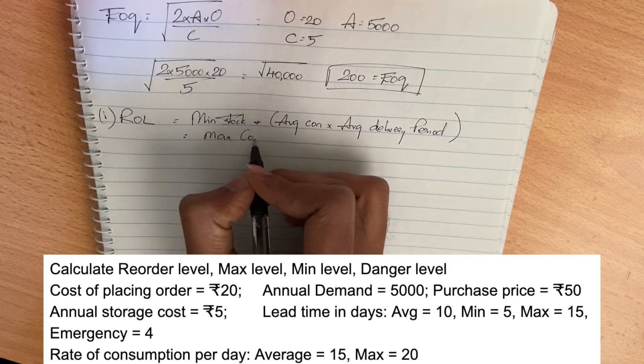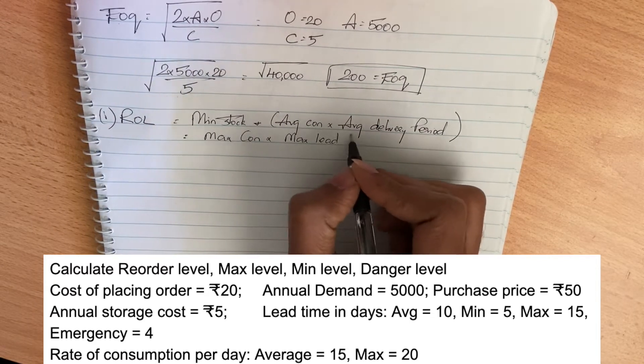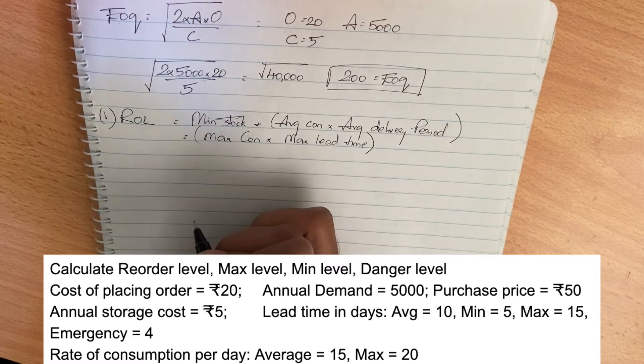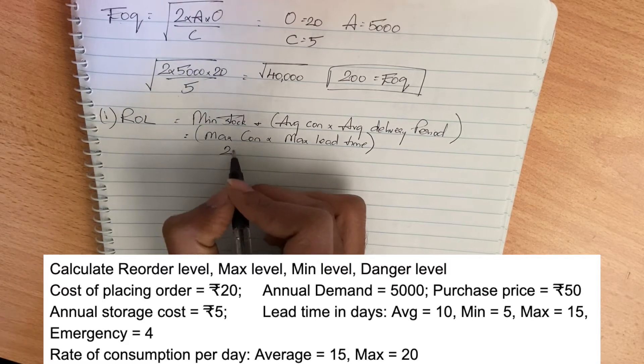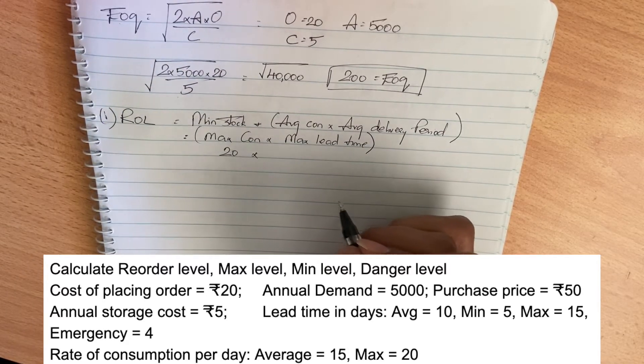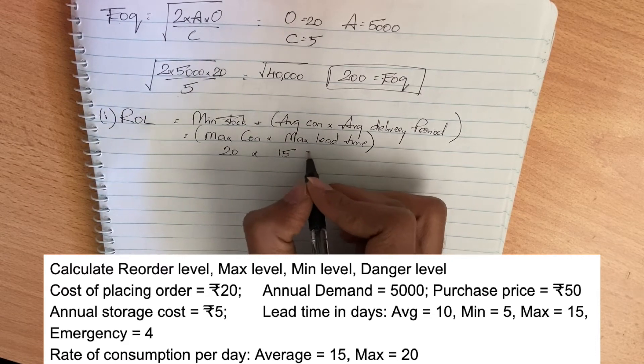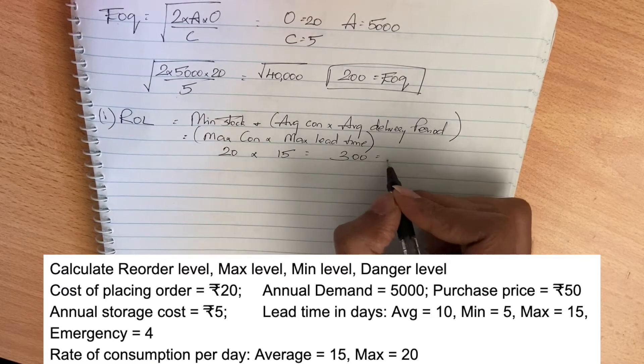Maximum consumption is 20 units per day and maximum lead time is 15, so multiply that to get 300. So 300 units is the reordering level.